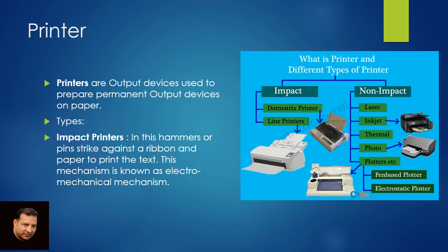Next is printer. We have varieties of printers, as seen in the figure on the right-hand side — different types of printers. Printers are output devices used to prepare permanent output on paper. First, impact printers — impact means physical contact. This type of printer uses hammers or pins that strike against a ribbon and paper to print the text, just like old typewriters. This mechanism is known as an electromechanical mechanism.